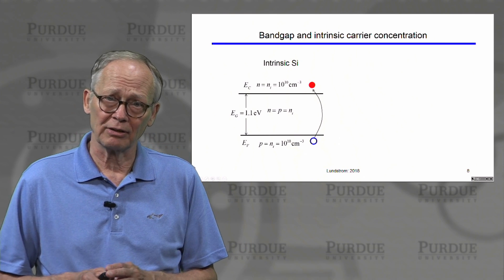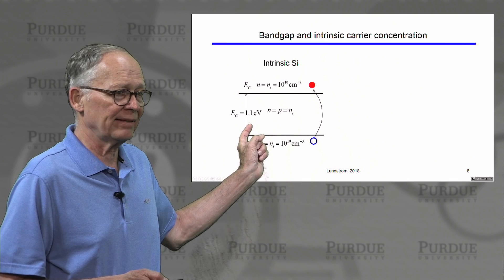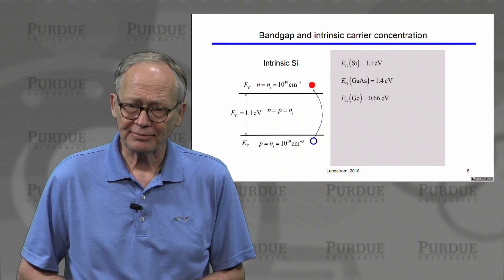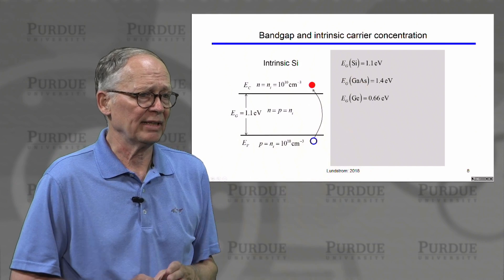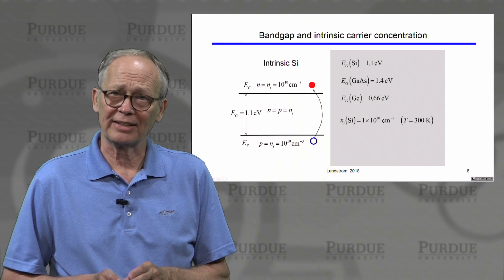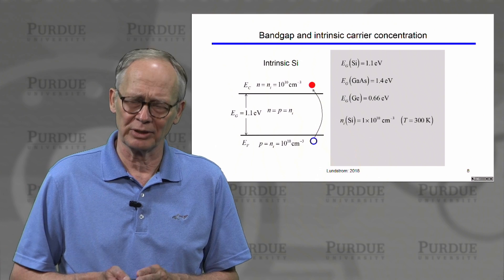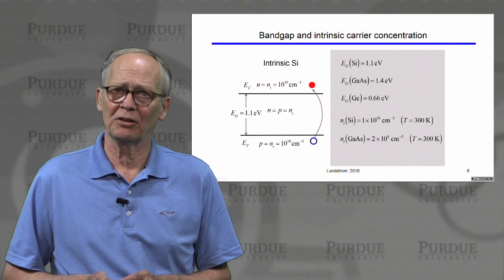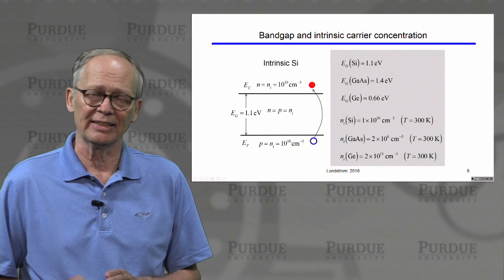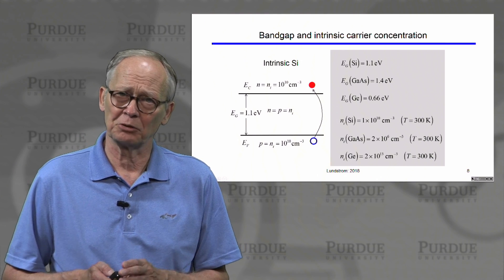We then talked about the two most important characteristics of any semiconductor: the band gap and intrinsic carrier density, which go together. The larger the band gap, the more difficult it is to break covalent bonds and the smaller the number of intrinsic carriers. For silicon, the band gap is about 1.1 eV. The intrinsic carrier density for silicon is 1 times 10 to the 10th per cubic centimeter at room temperature — a number worth remembering. For the larger band gap gallium arsenide, the number is considerably smaller, and for the smaller band gap germanium, the number is considerably higher.